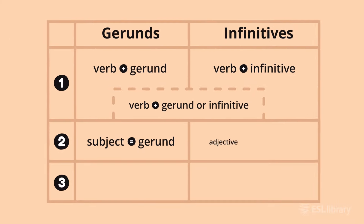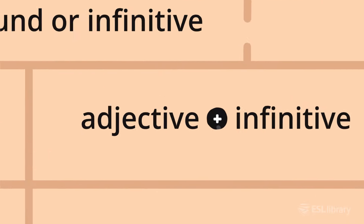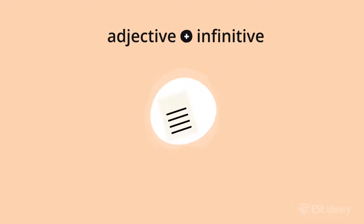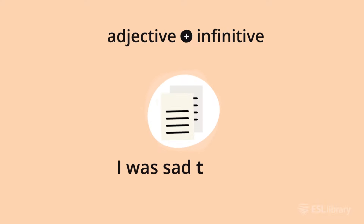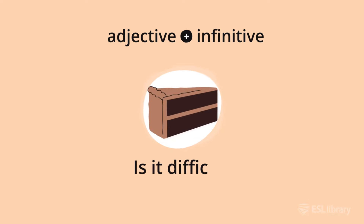After an adjective, we usually use an infinitive verb. For example, 'I was sad to see my test score,' and 'is it difficult to make a cake?'